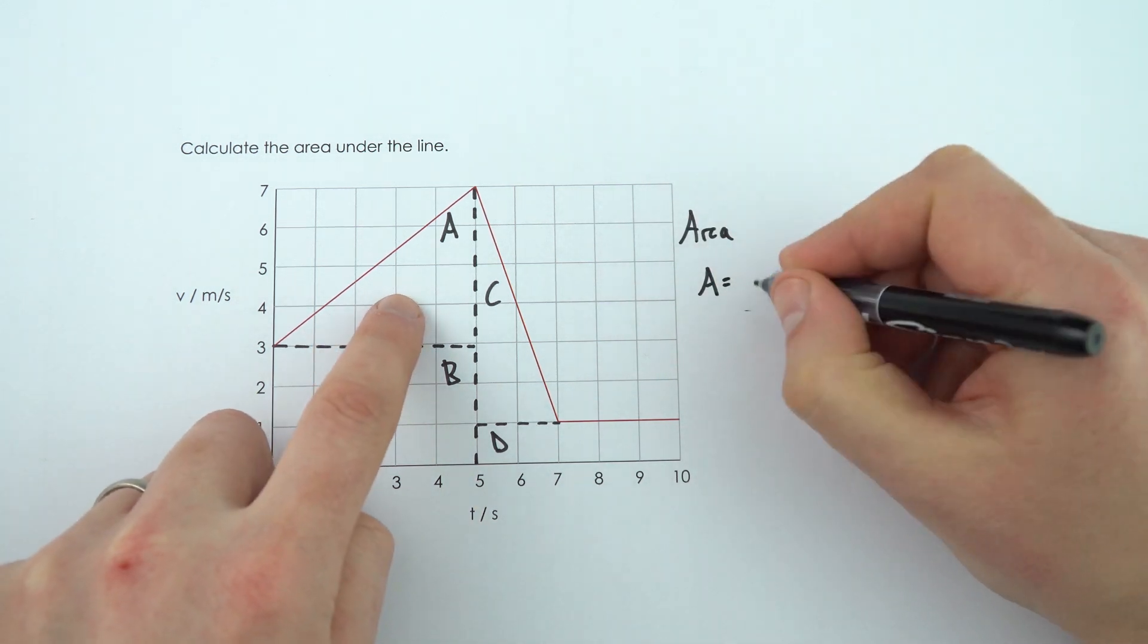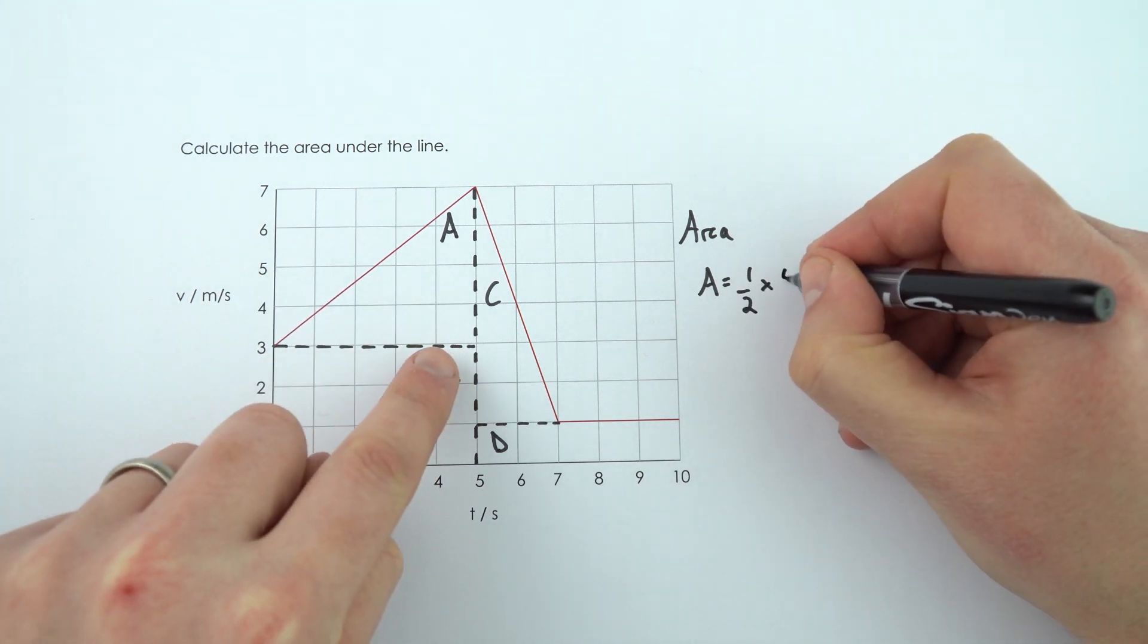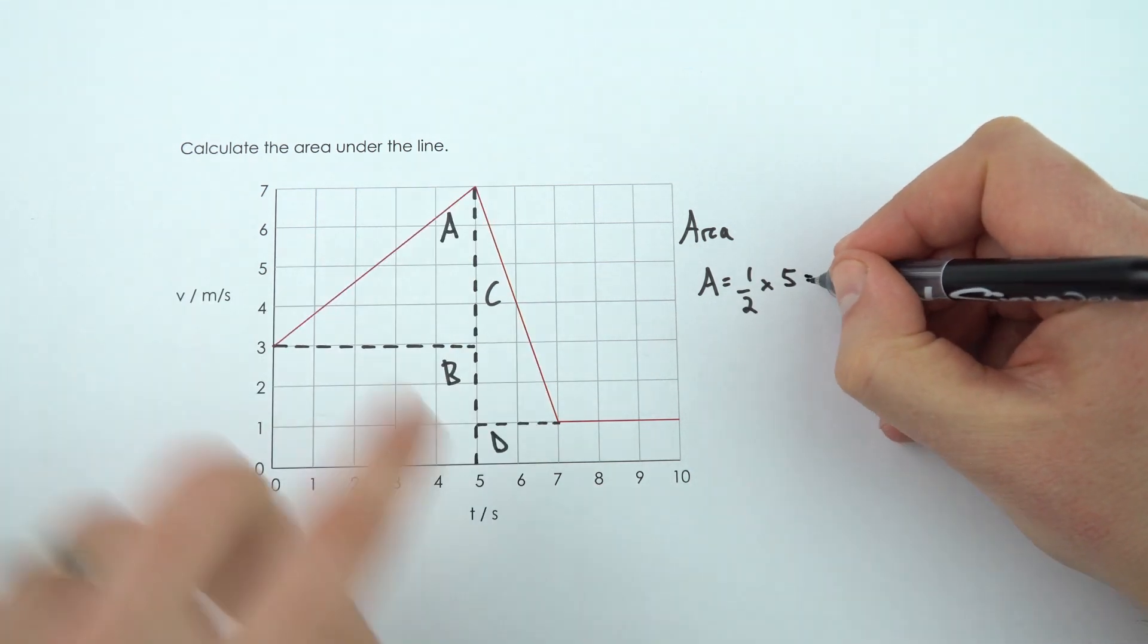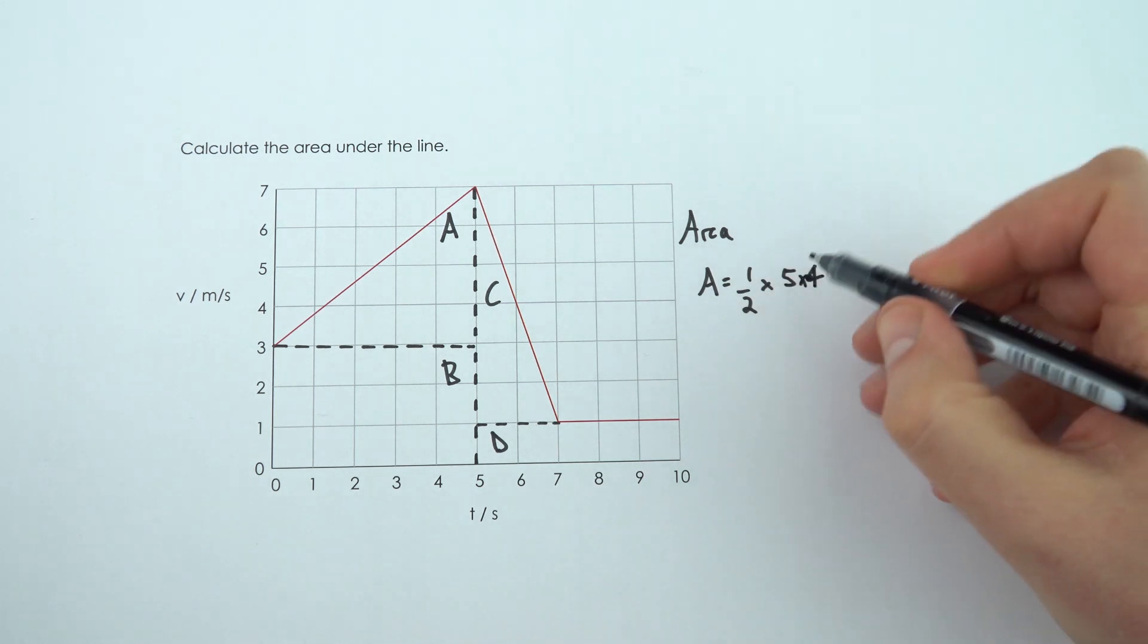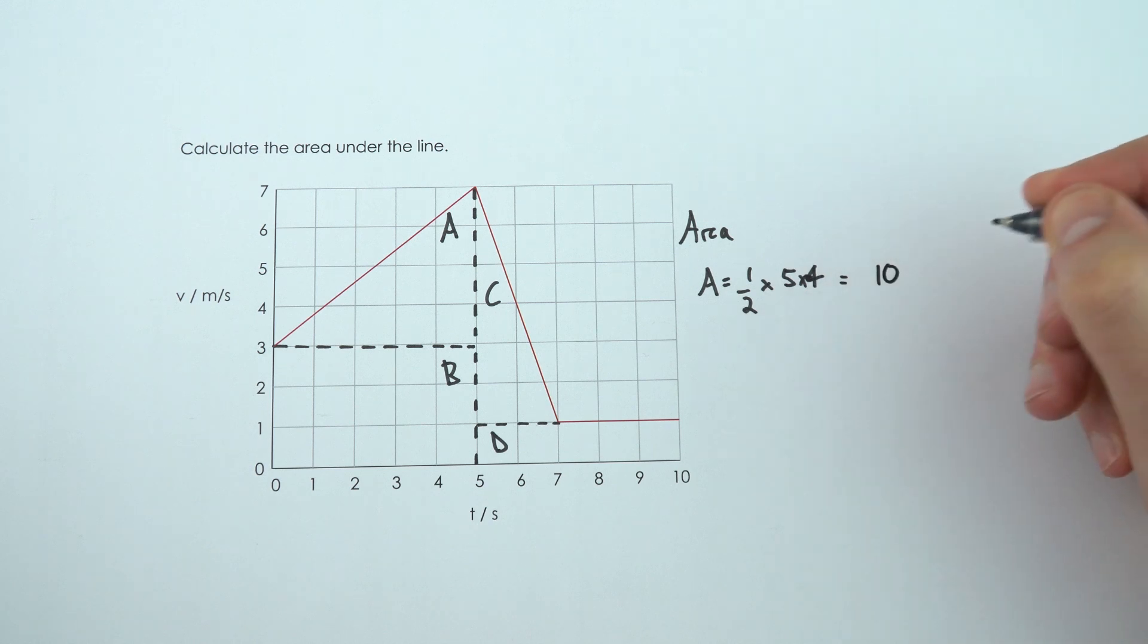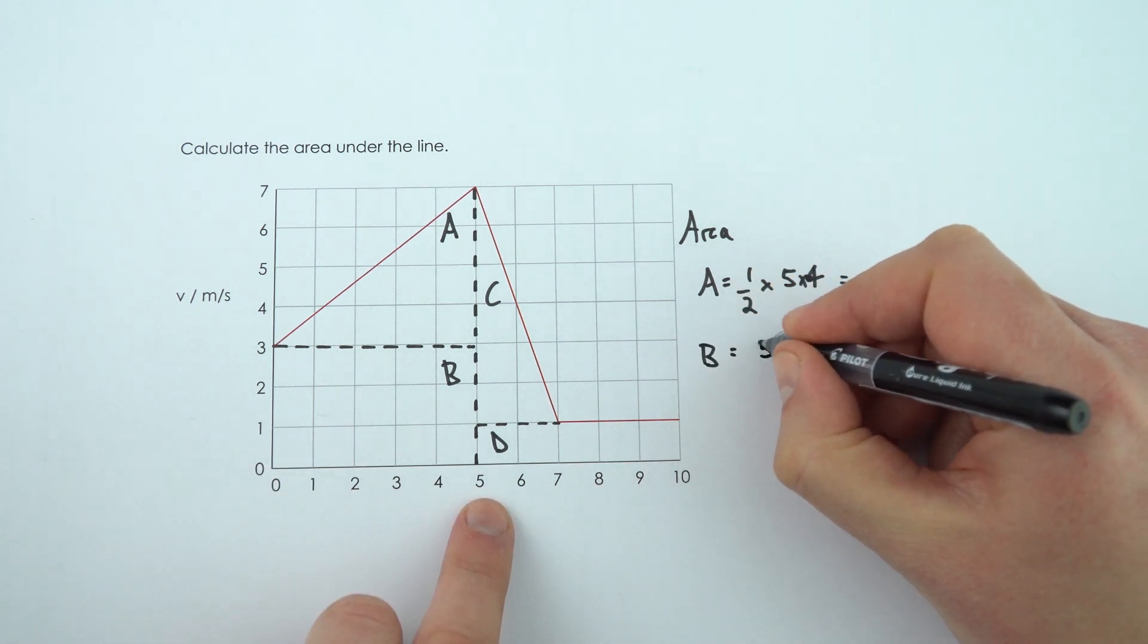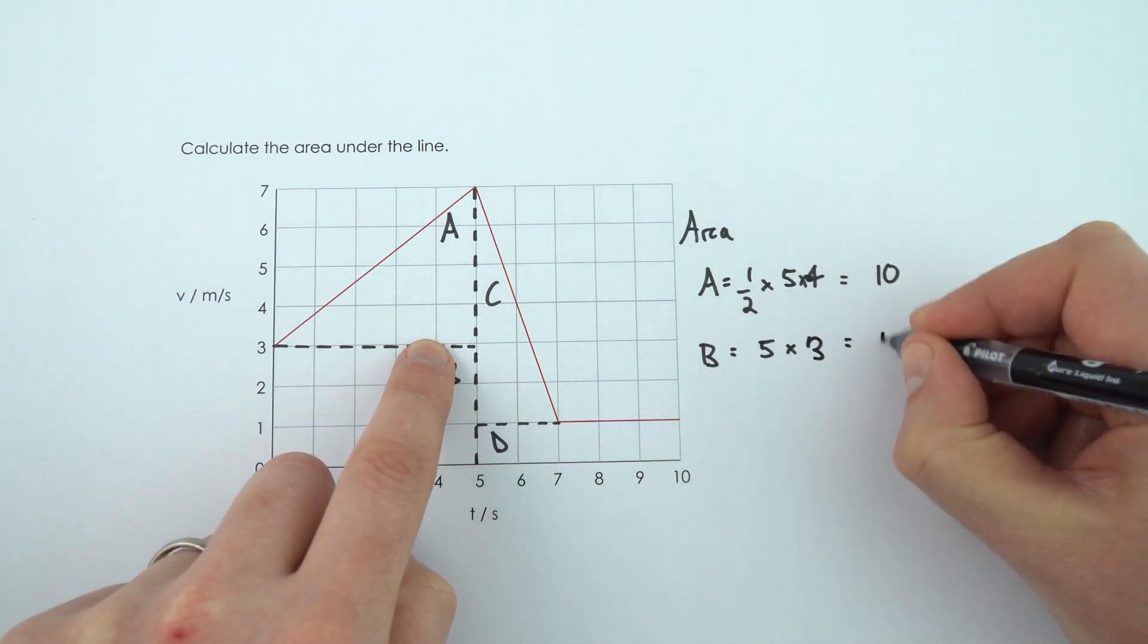So area A is a triangle, so it's a half base times height. The base goes from 0 to 5 and the height goes from 3 to 7. And 7 take away 3 is just equal to 4. And so 5 times 4 is 20, so actually half of that is just equal to 10. For area B, it's a rectangle. The base is 5, the height is 3. So 3 times 5 is equal to 15.